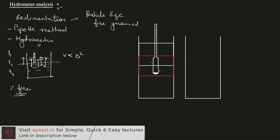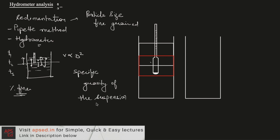For calculating the percentage finer, instead of using a pipette, we use something called a hydrometer. The hydrometer has a bulb at the bottom and a long tube attached to it with readings on it. With the help of the hydrometer, we can indirectly correlate these readings to the specific gravity of the suspension, and with that we can find out the percentage of particles finer than a given particle size.